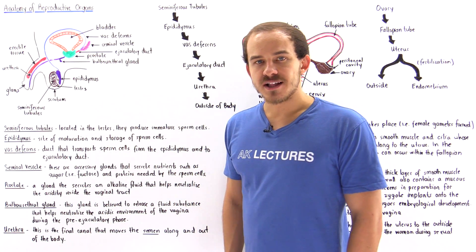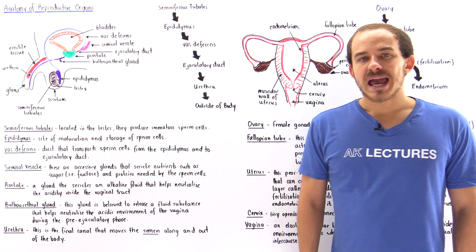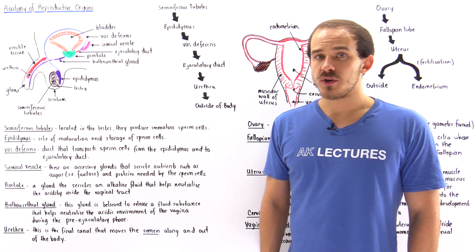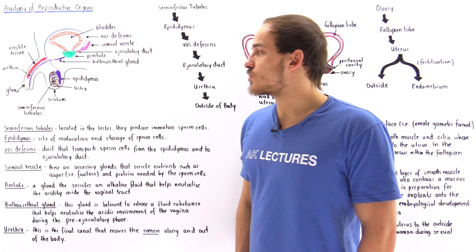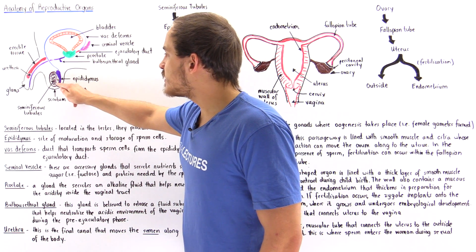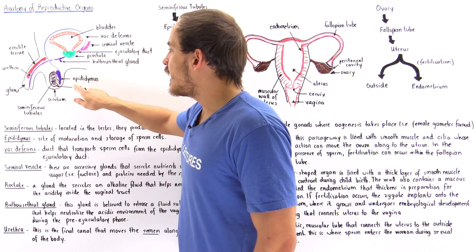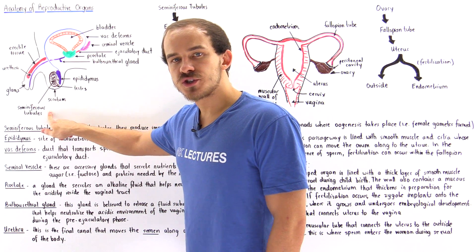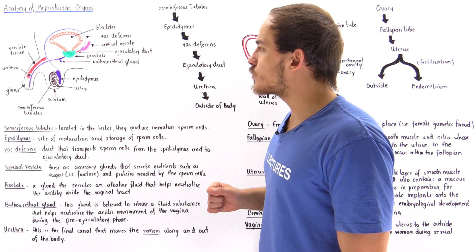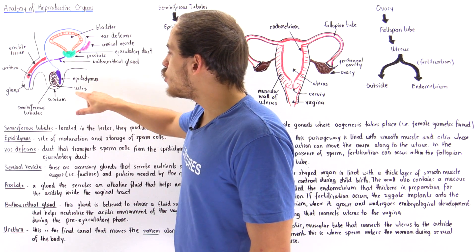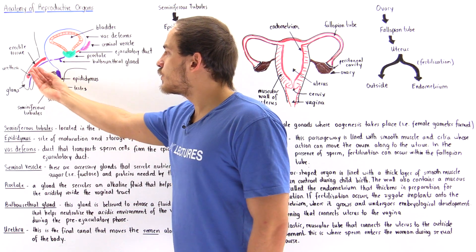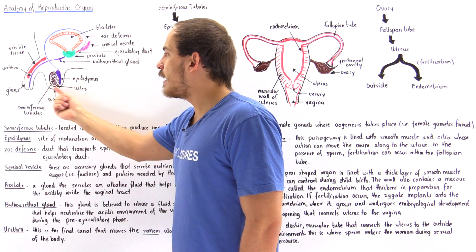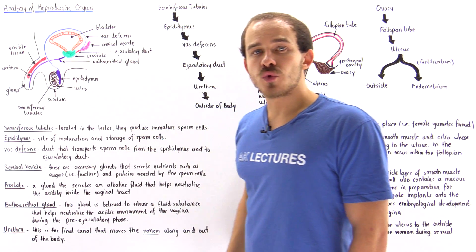Recall that the male gonads are known as the testes. Inside the testes, we have the seminiferous tubules where sperm cells are actually formed. The testes are shown in brown, and inside the testes we have the seminiferous tubules where spermatogenesis actually takes place.